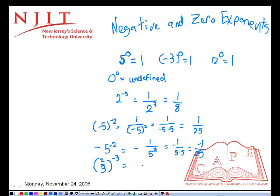Two-thirds to the negative three is the reciprocal of two-thirds to the power of three. We'll discuss how to take the exponent of a fraction in a later podcast.